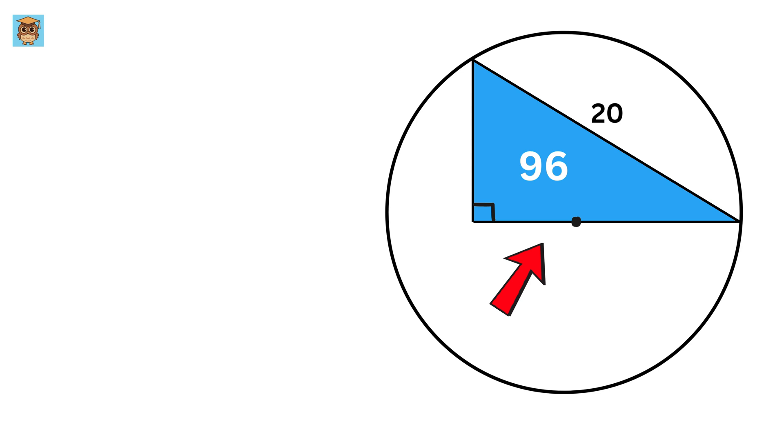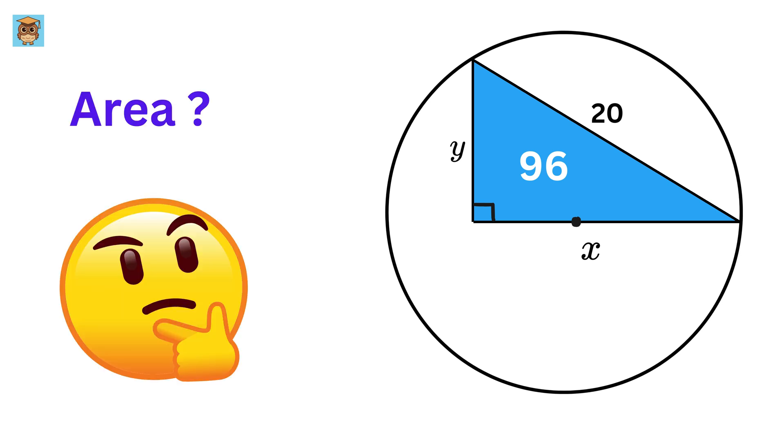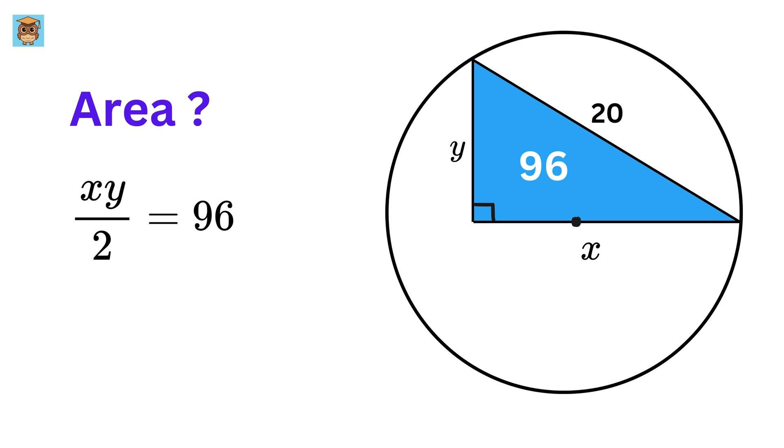We have this right triangle, so let us label its side lengths as x and y. So, what will be the area of this triangle? It will be x times y over 2, but it is also equal to 96. Therefore, x times y equals 96 times 2, or 192.